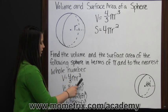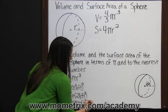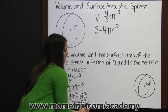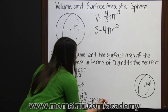To find it to the nearest whole number, simply multiply times pi, and 288 times pi is 905 feet cubed.